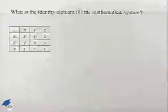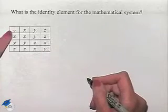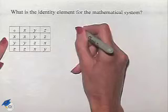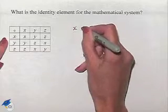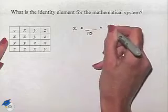Now let's consider another problem dealing with properties. What is the identity element for the mathematical system? Here we're going to have elements of X, Y, and Z put together with our operation. We're looking for an identity element, which means we need to start with each individual element, combine it with the identity, and come up with the element being the result.